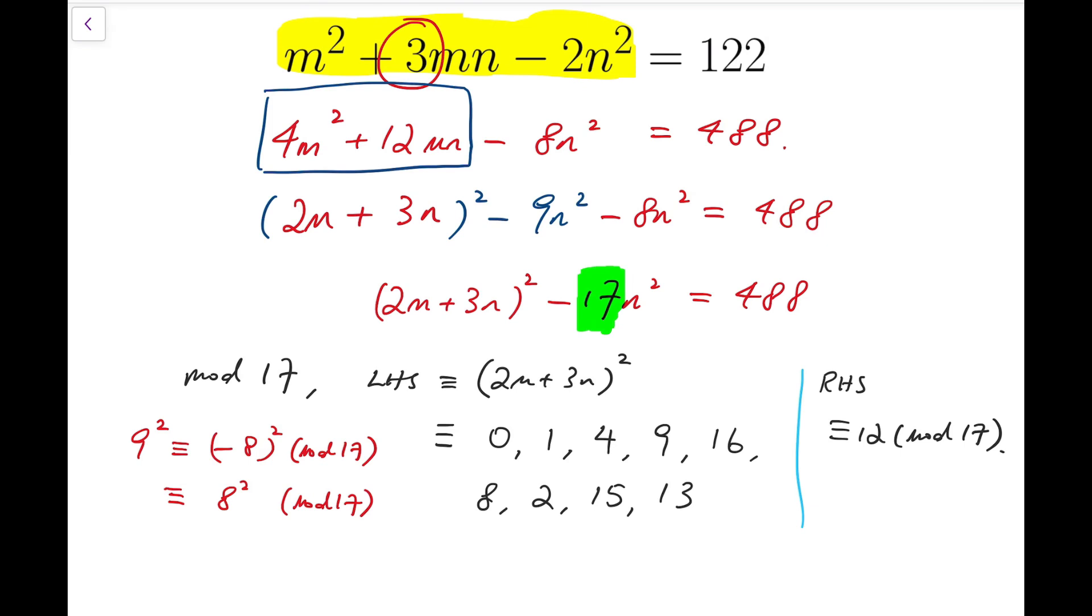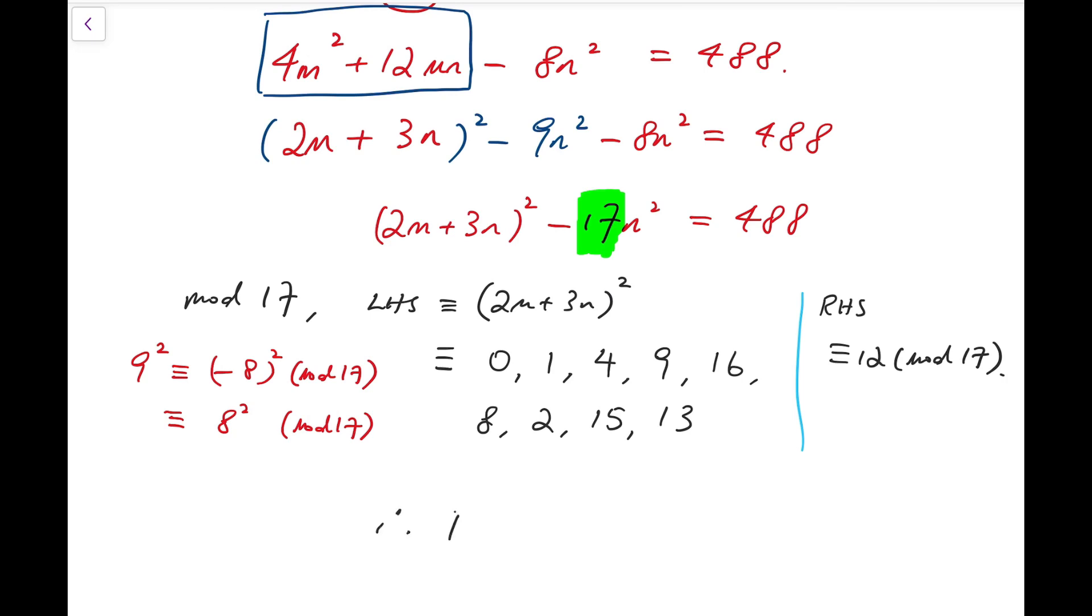From this, you can see that the remainders of both sides, when they are both divided by 17, they never match. Left-hand side can be, they have 9 possible values, but they are all not equal to 12. So that means, we actually have no integral solution.